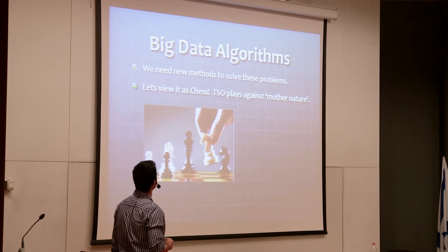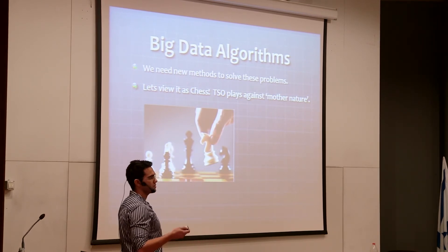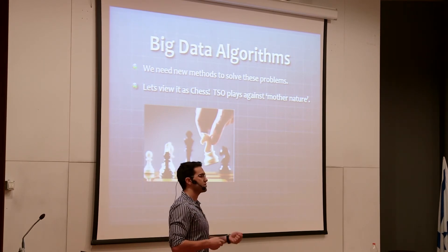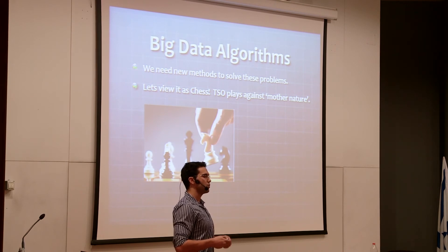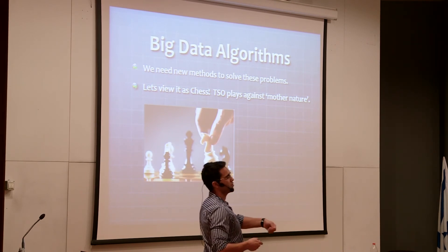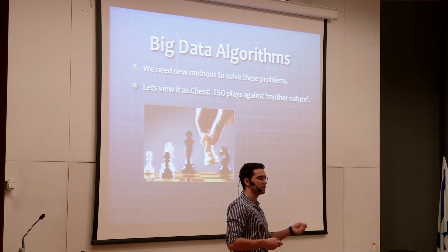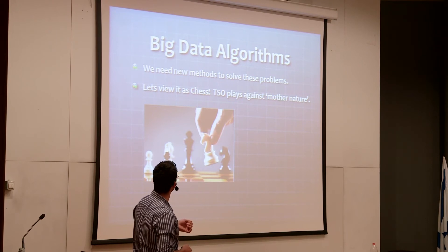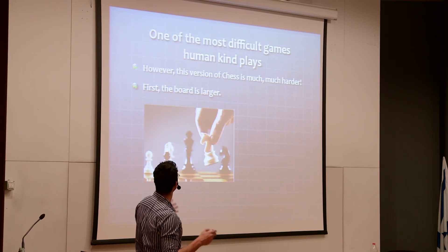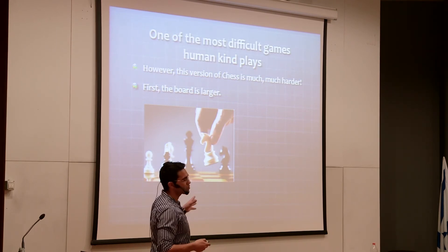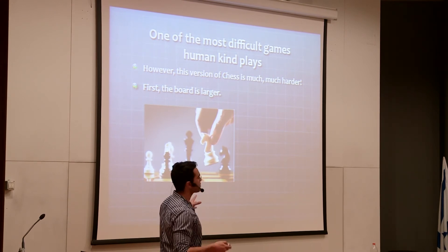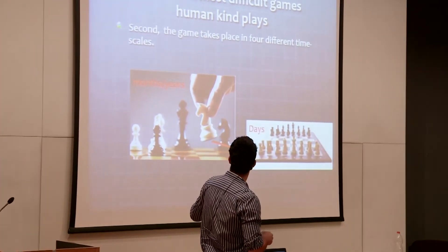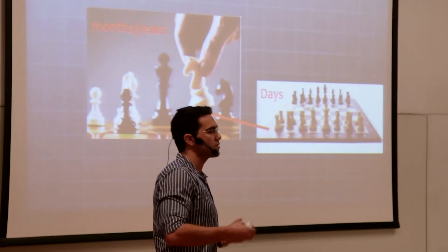For the algorithms, we need to devise new methods. We view it like chess: the TSO plays against Mother Nature. Mother Nature sets a move — she tells us what the wind is and whether it's hot — then consumption jumps and the TSO must react. But this is a much harder game than chess. First, the board is far larger. Second, it takes place across different timescales that are all interdependent.